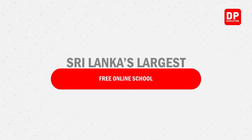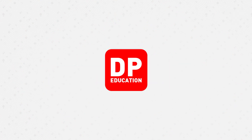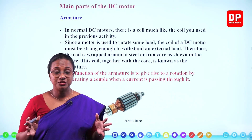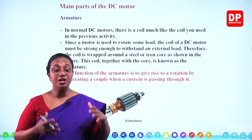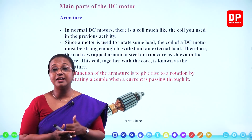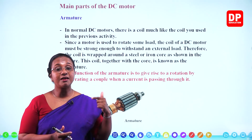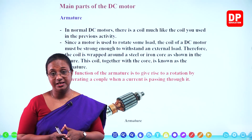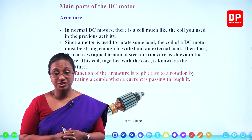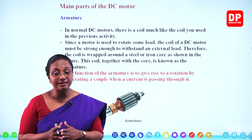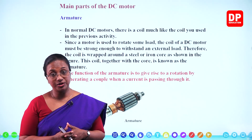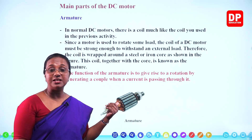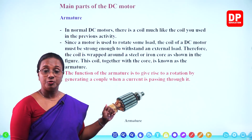Welcome to today's lesson. In the previous chapter, I explained the functioning of a direct current motor through an activity. You were able to understand the force generated on a current-carrying conductor placed in a magnetic field. When current flows through a coil, the force acts in opposite directions like a couple, causing the coil to rotate. Since we used a battery supplying direct current, we call it a direct current motor. The loudspeaker was the first application we discussed, and the direct current motor is the second.